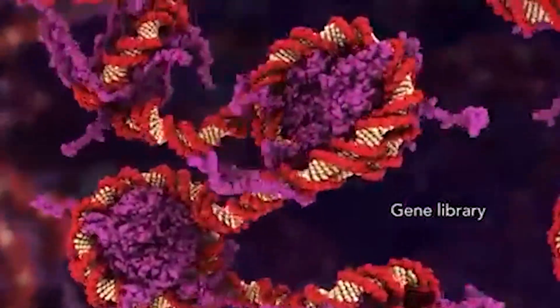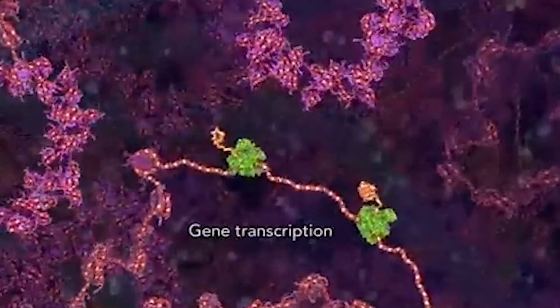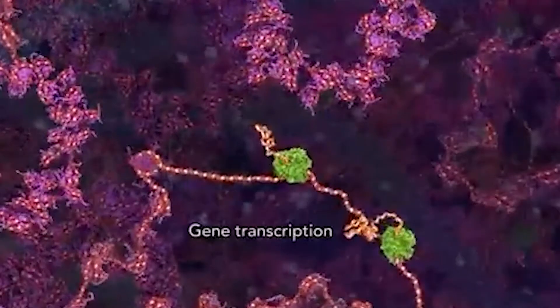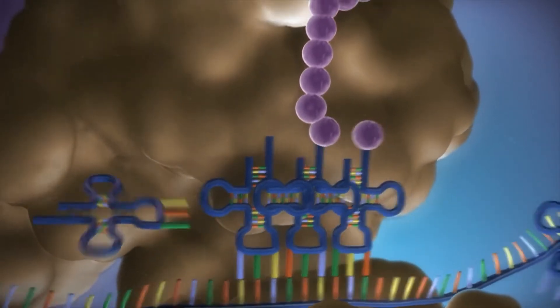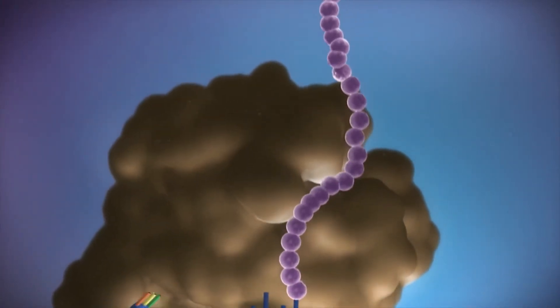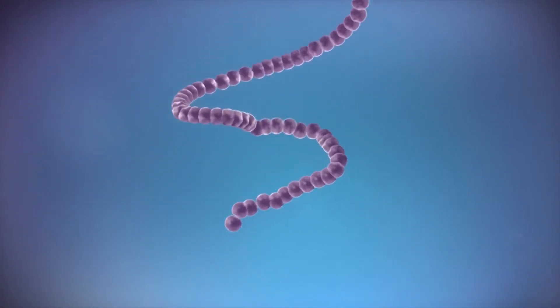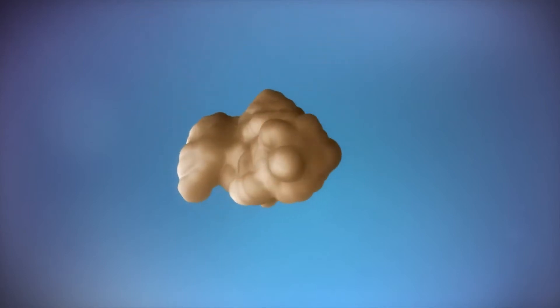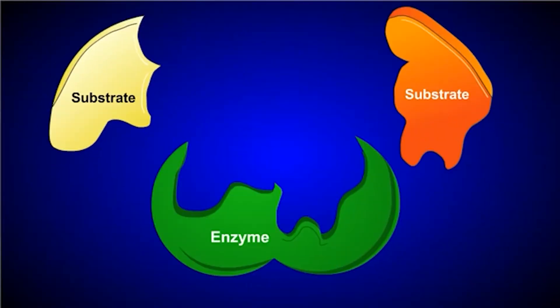Quick side note on proteins. They fulfill a plethora of different functions in the body. Some inform, others make cells move, and others catalyze certain reactions. All proteins are basically a long string consisting of a sequence of different amino acids. Based on this sequence, the string then arranges itself in a complex structure due to tiny intramolecular interactions between the amino acids. This structure then allows the protein to perform its function.